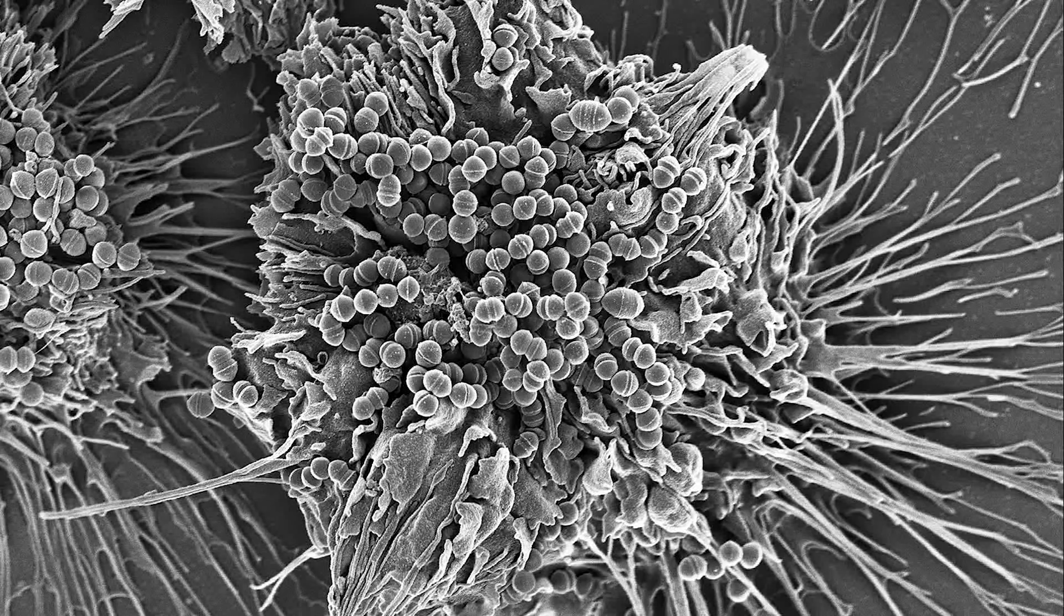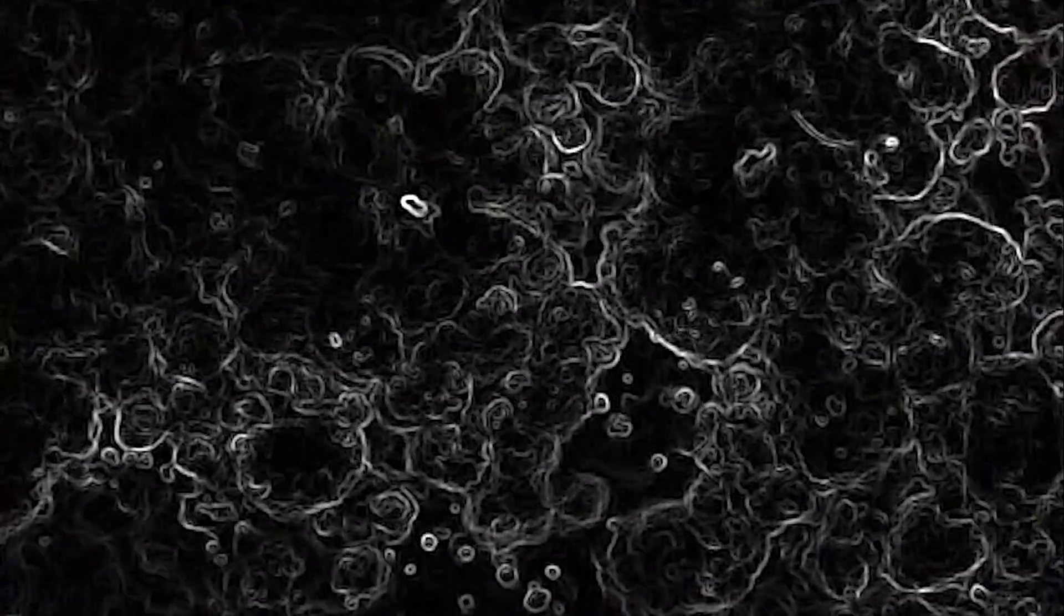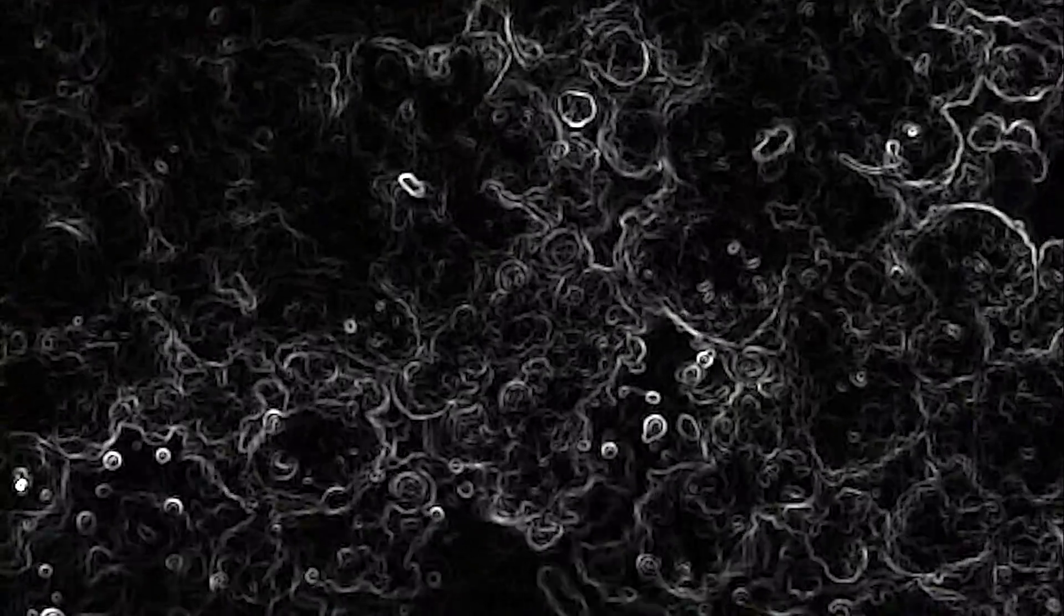At the nanoscale, color ceases to have any meaning. Gravity is dwarfed by chemical forces and static electricity. Surface chemical reactions, too small and subtle for even the smallest animal or bacteria to notice, are the weather, the hurricanes and lightning storms you experience.